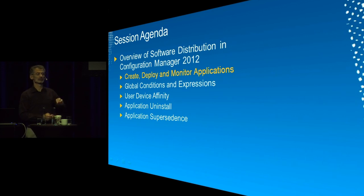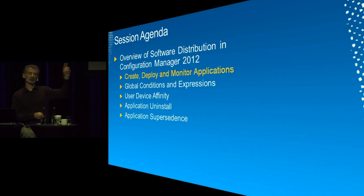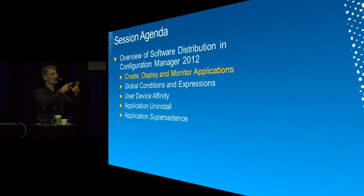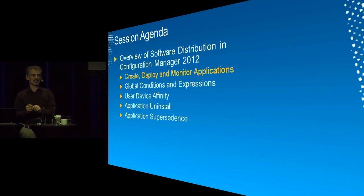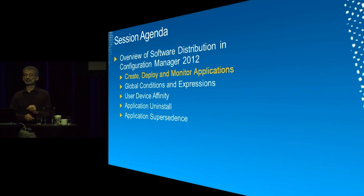The scenario I'll run through is: I want to make sure that when Johan gets his software, he only installs it on his computer and not somebody else's. I'm going to create an application with two deployment types — one MSI-based that he can install on his primary device, and a second App-V version that runs when he's not on his primary device. This scenario will involve multiple deployment types, requirement rules, custom requirement rules, and user device affinity.